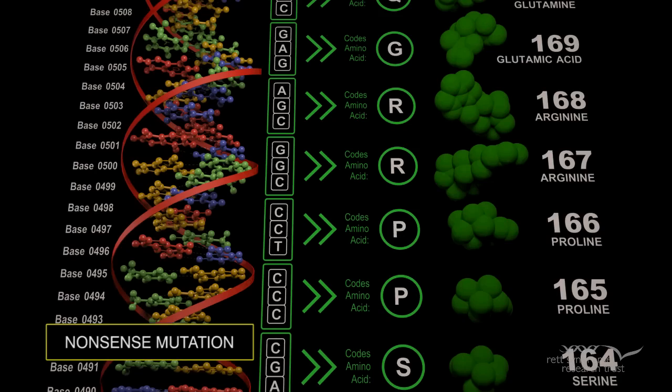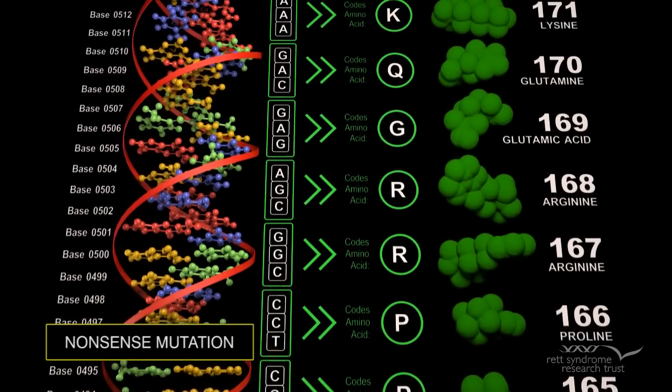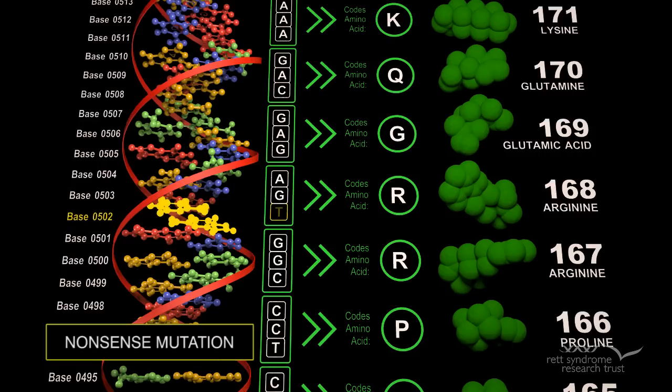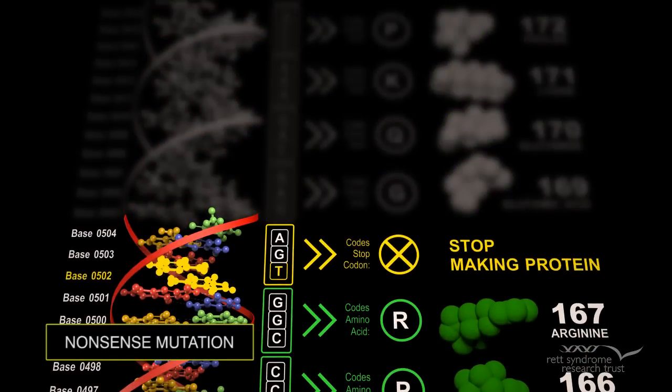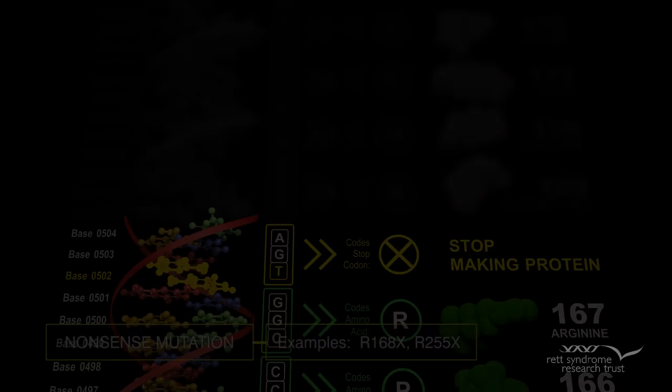Nonsense mutation: A nonsense mutation is also a change in one DNA base pair. Instead of substituting one amino acid for another, the altered DNA sequence prematurely signals the cell to stop building a protein. This type of mutation results in a shortened protein that will function improperly or not at all. The X denotes a mutation that results in a prematurely truncated protein.